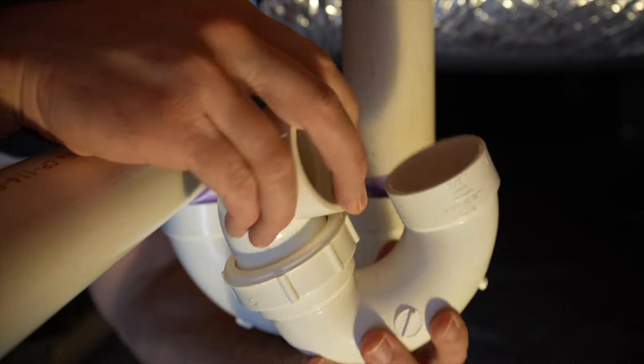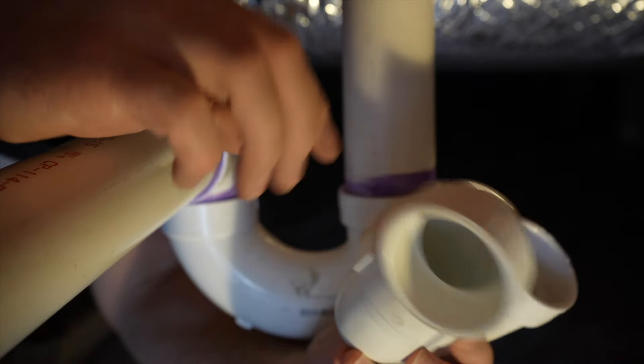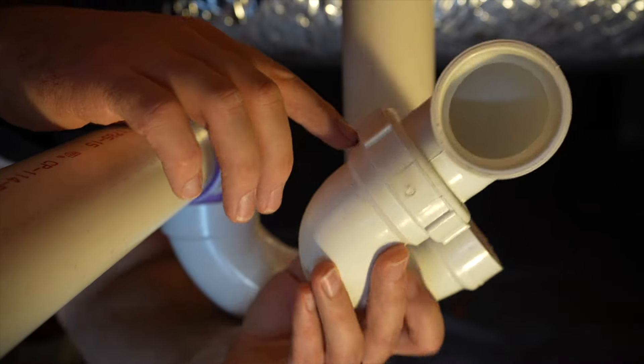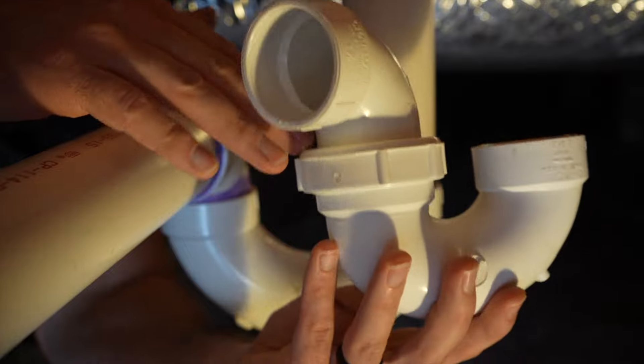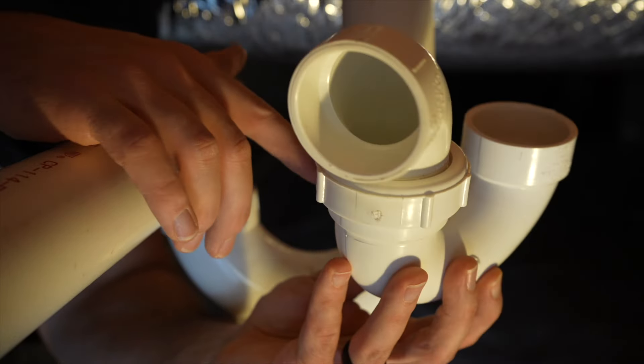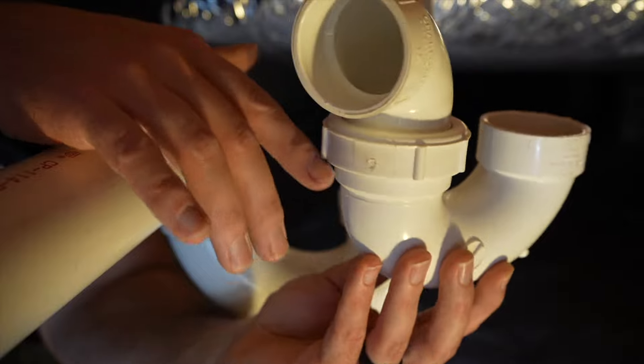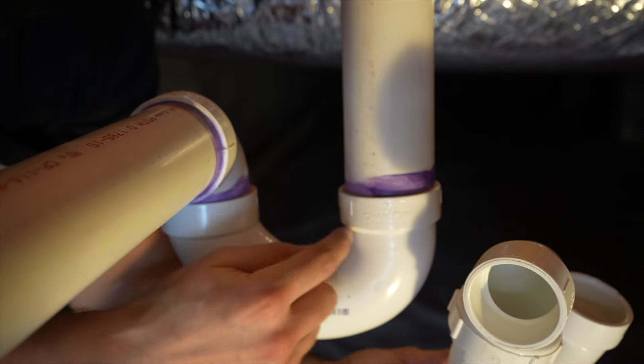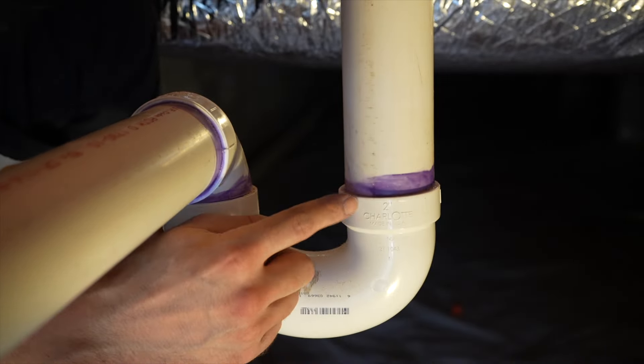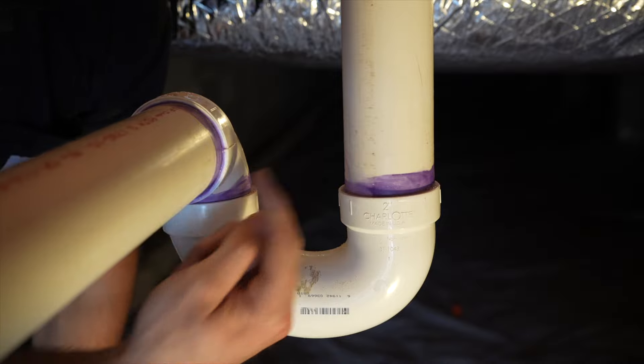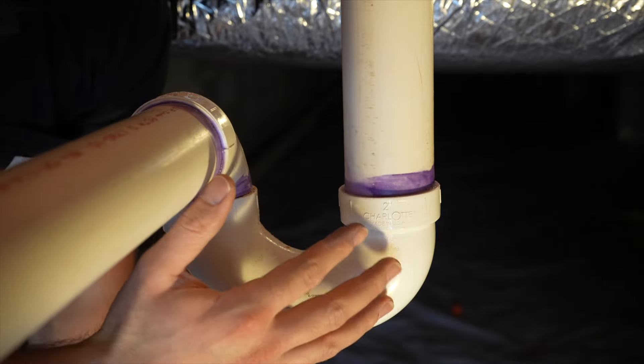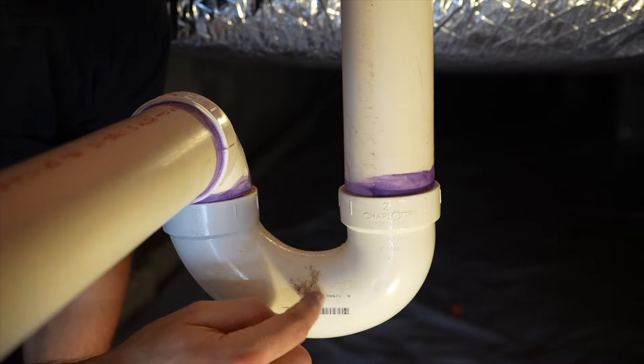Just so you're aware, they do make traps like this that have a threaded connection, so that way if you do drop something down the drain, you can just unthread it here and then get, let's say, your ring or whatever you drop down the drain out. That's the only problem with having ones that glue together like this. If you drop something down the drain, you're going to have to cut this out and replace this whole section to get inside this trap.